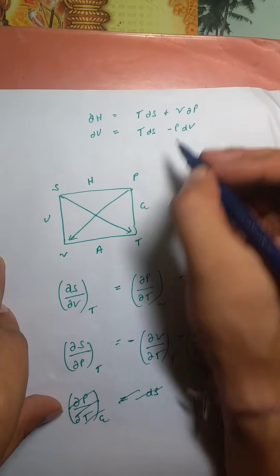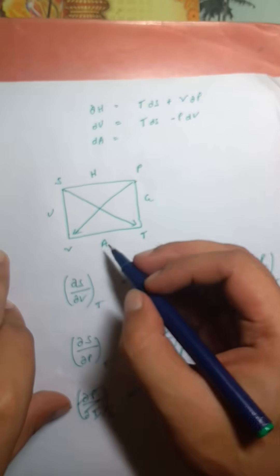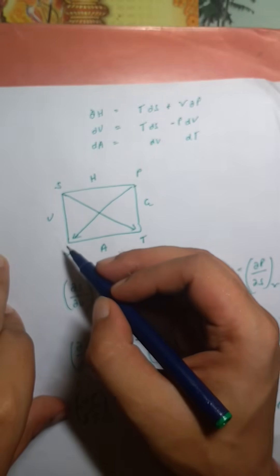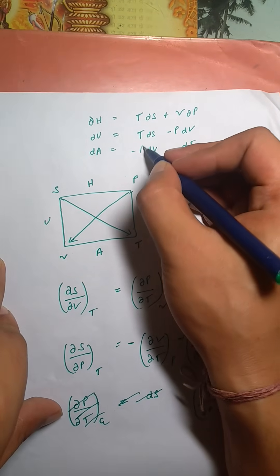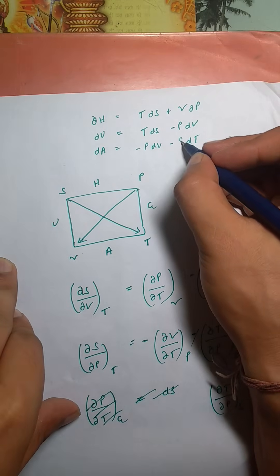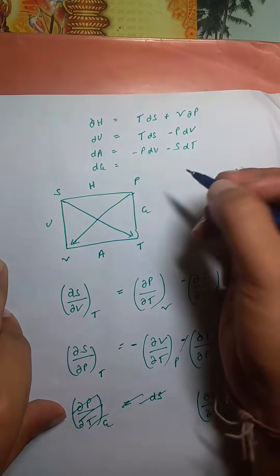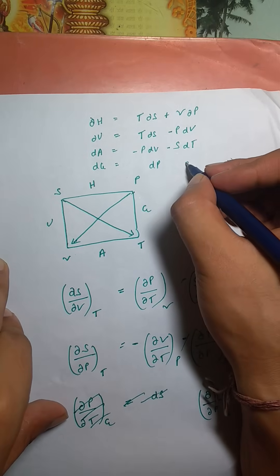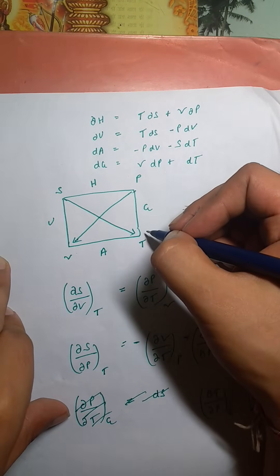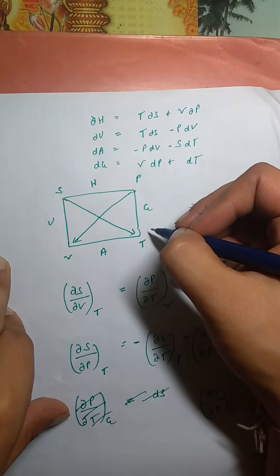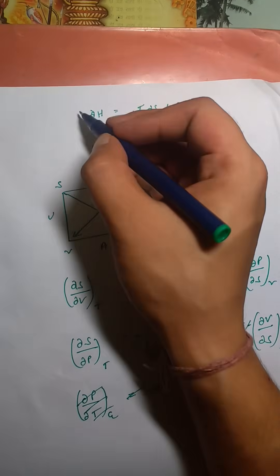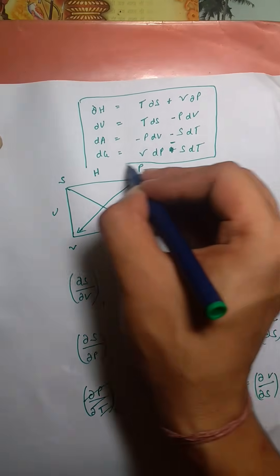For dA, adjacent variables are V and T. For V, we go from V to P — so −PdV. For T, the opposite is S, and the arrow goes S to T but we need T to S — so −SdT. Thus dA = −PdV − SdT. For dG, adjacent variables are P and T. From P to V gives +VdP. From T to S is opposite to the arrow — so −SdT. Thus dG = VdP − SdT. We've now derived eight formulas in total.